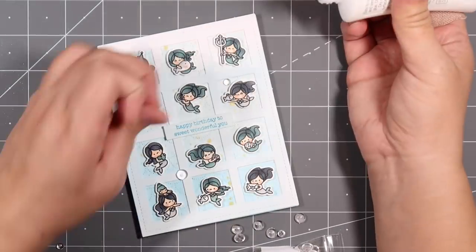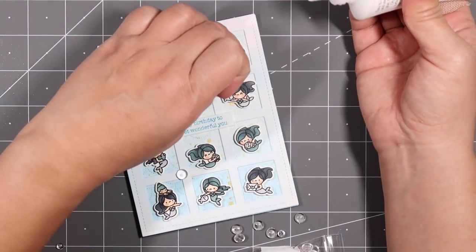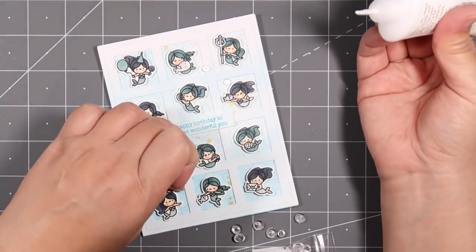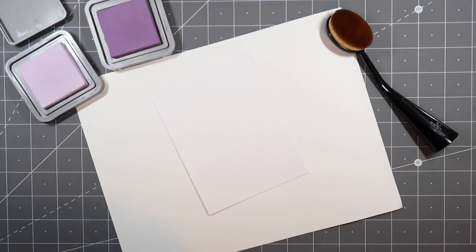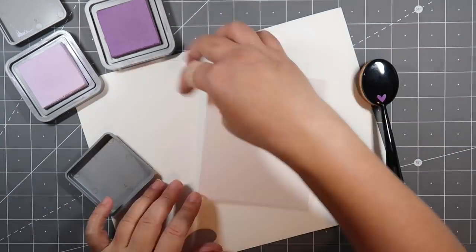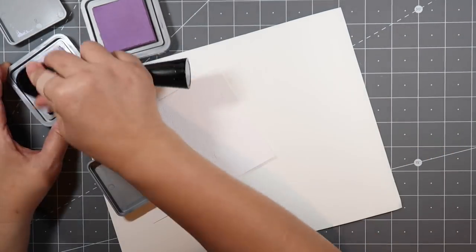I'll be finishing off the card using these little bubble embellishments. I really like breaking those out for little underwater scenes because they look like the perfect little bubbles. I will have pictures in the end of the completed cards.